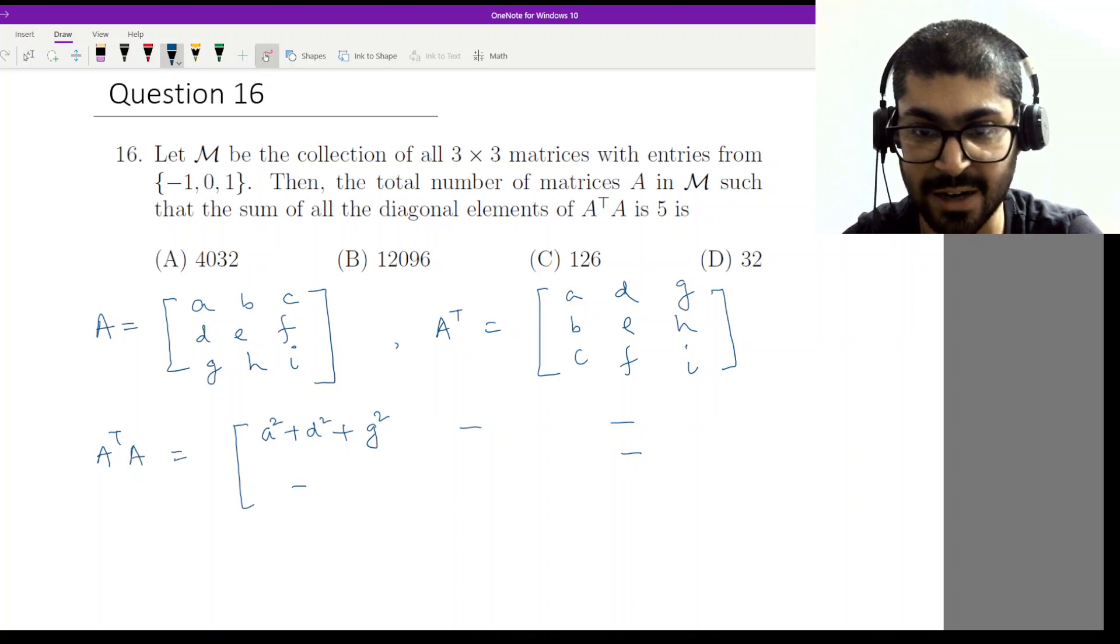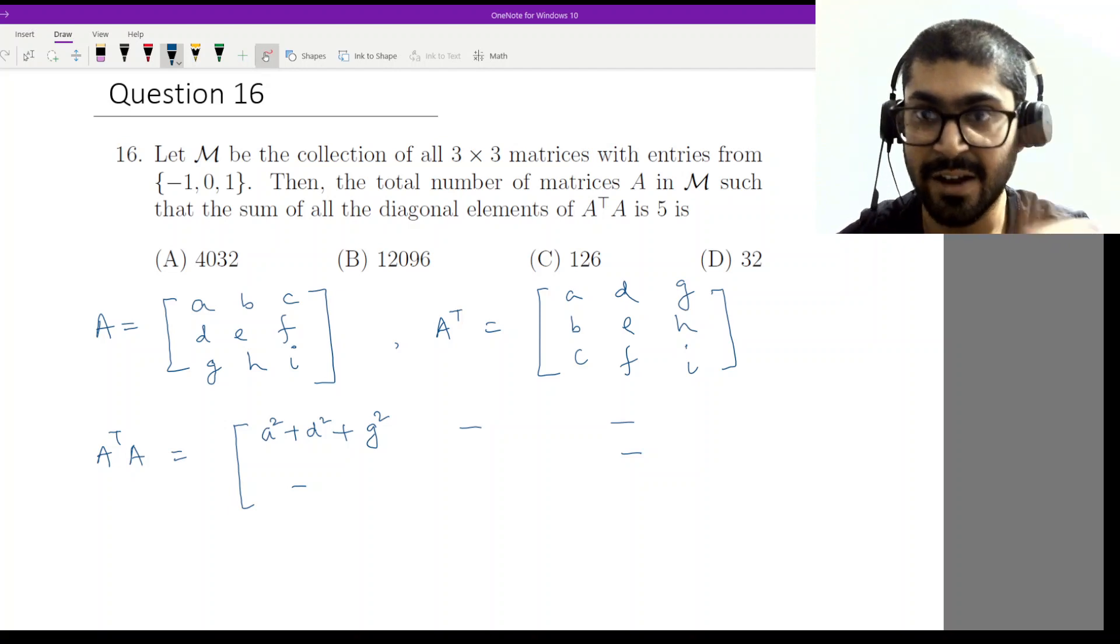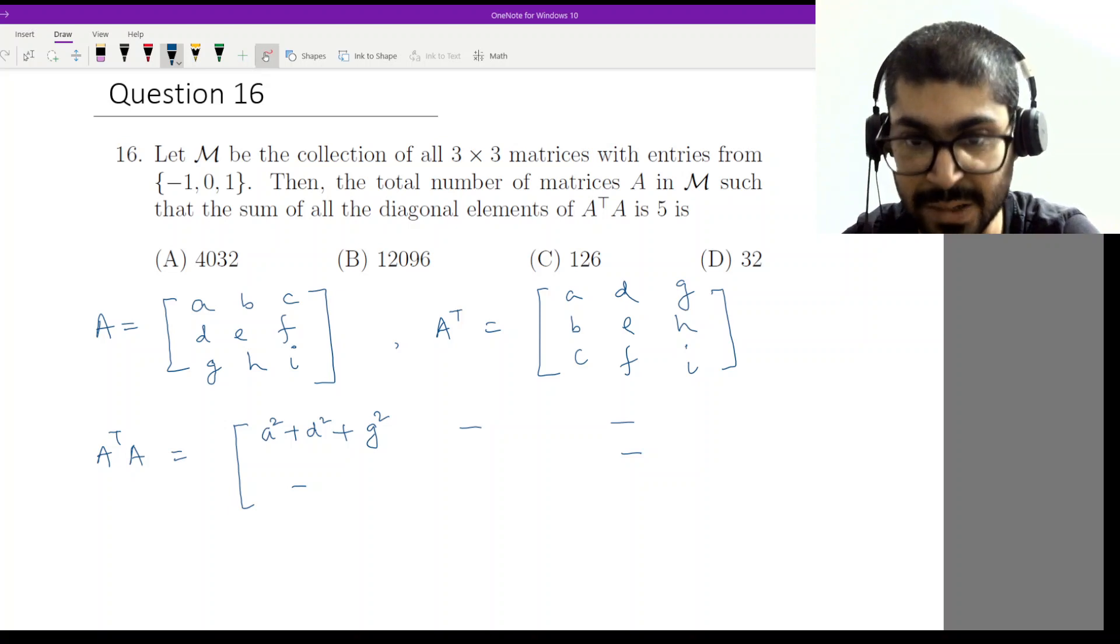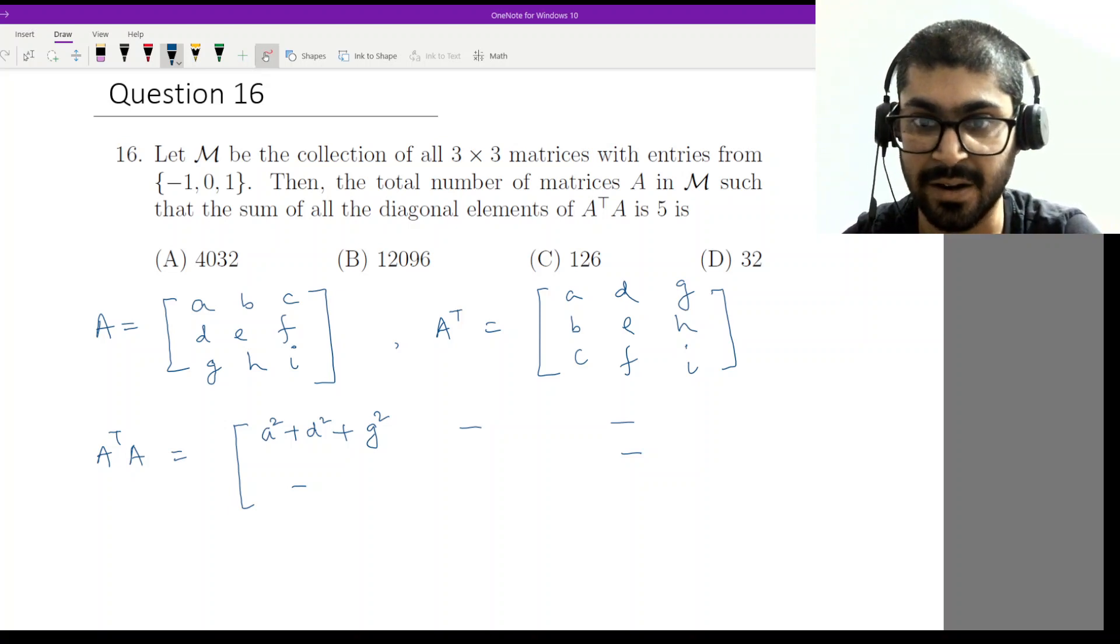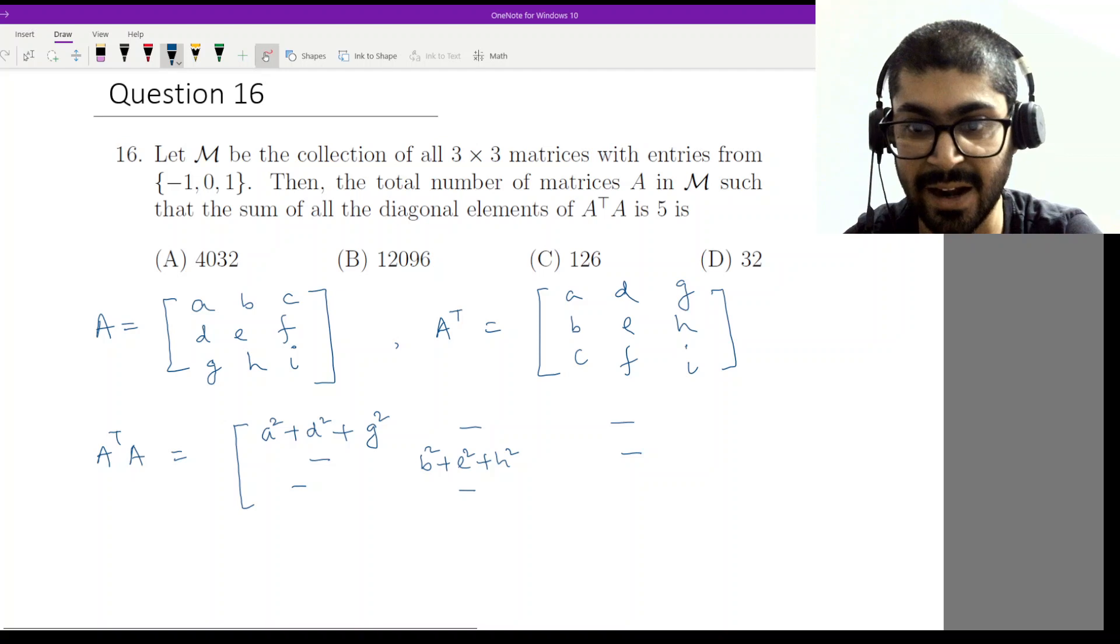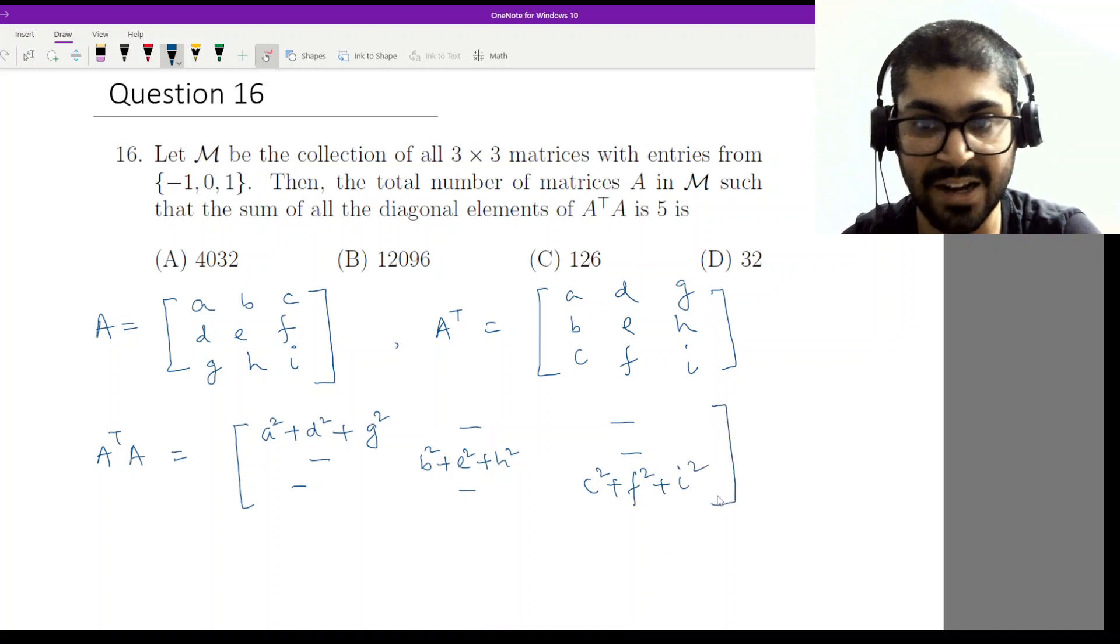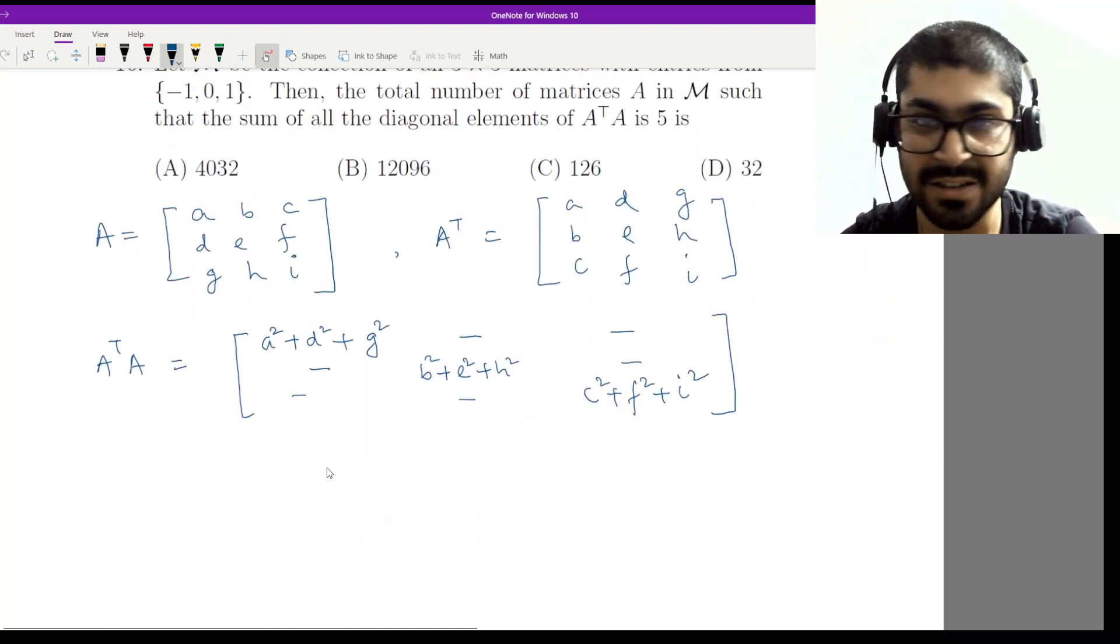A squared plus d squared plus g squared was the first diagonal element. What will be the second diagonal element? It will be b squared plus e squared plus h squared. And the last diagonal element would turn out to be c squared plus f squared plus i squared. So a very nice pattern emerges.